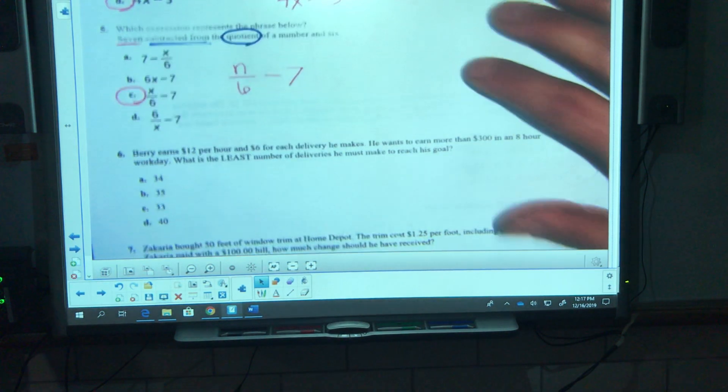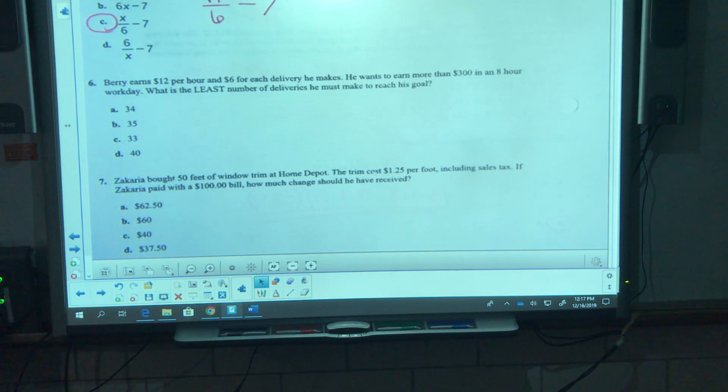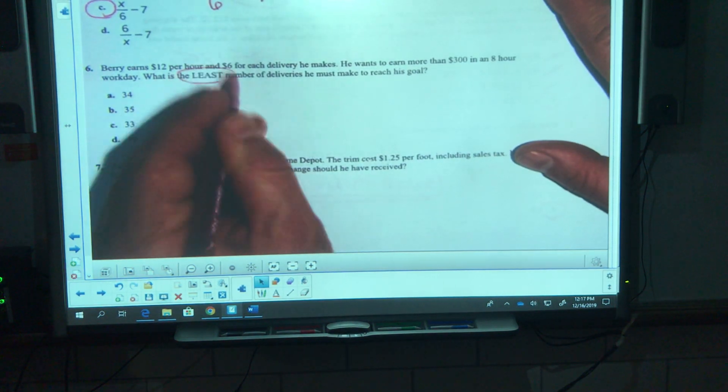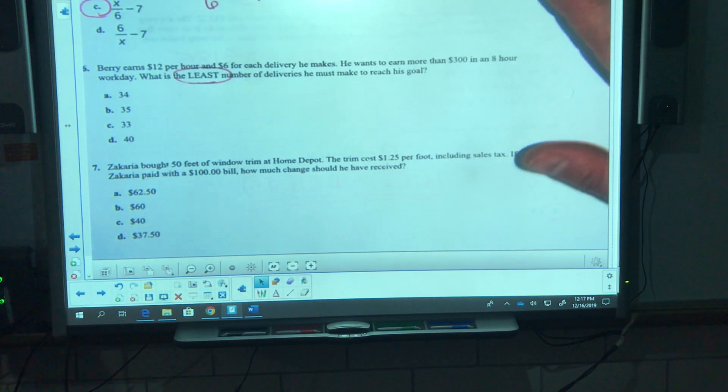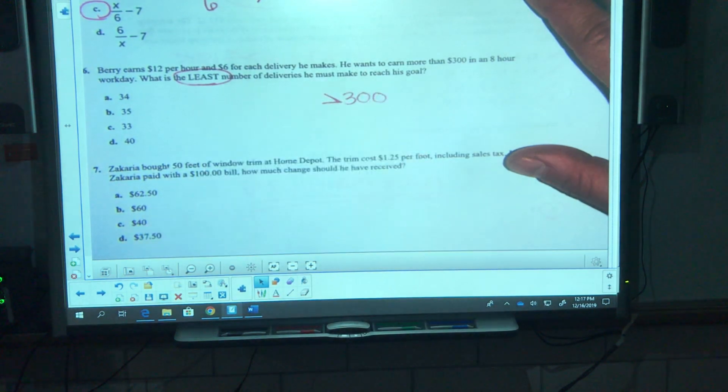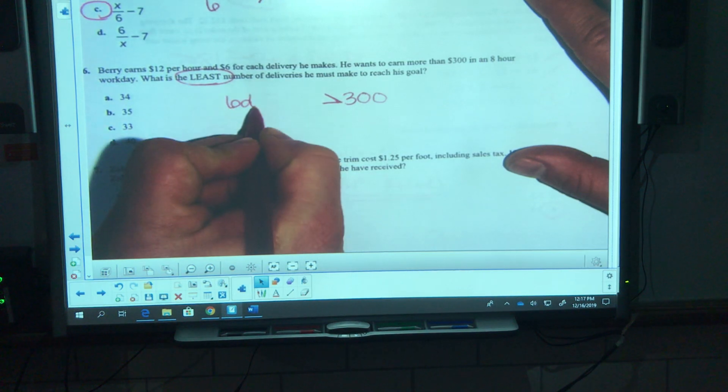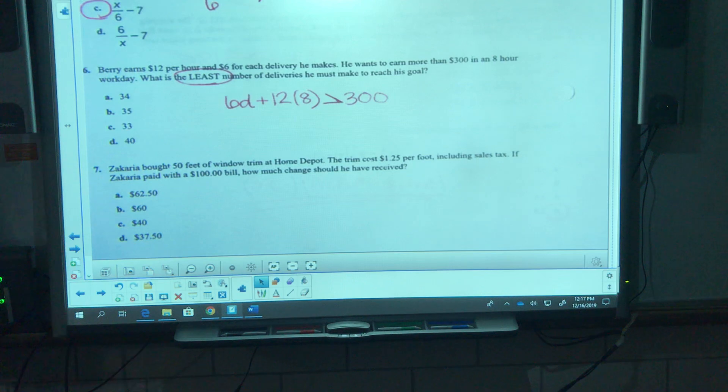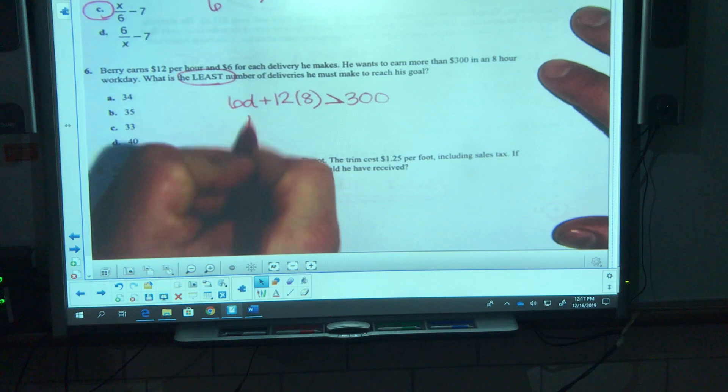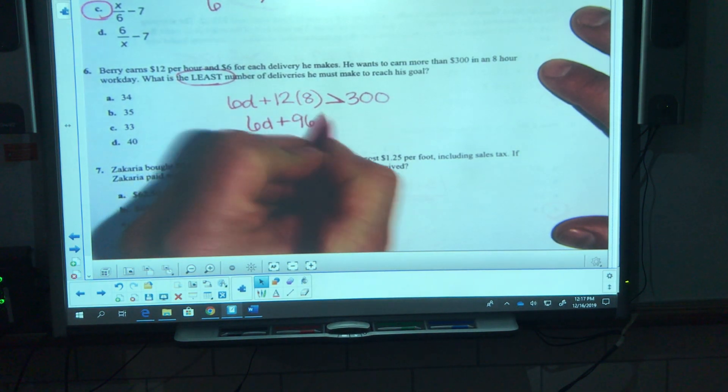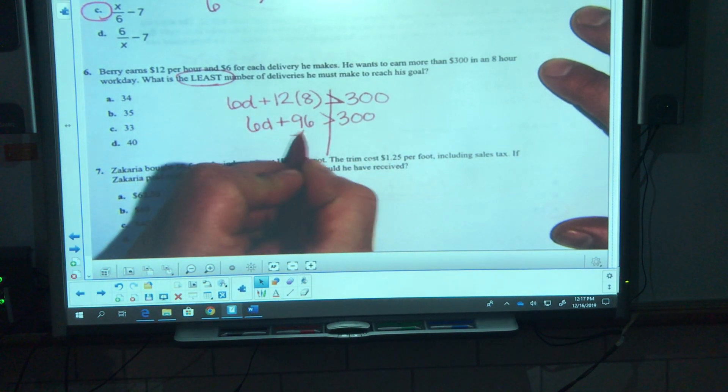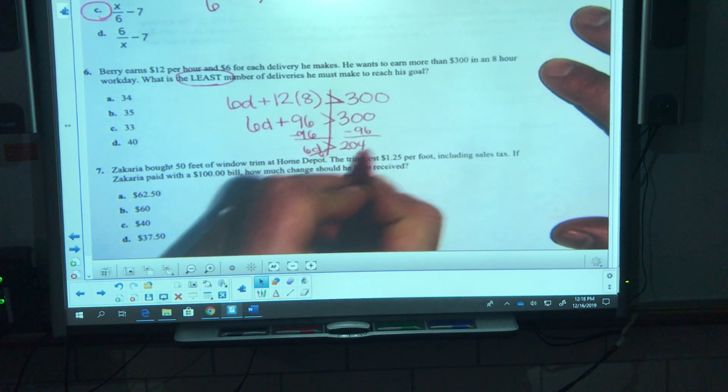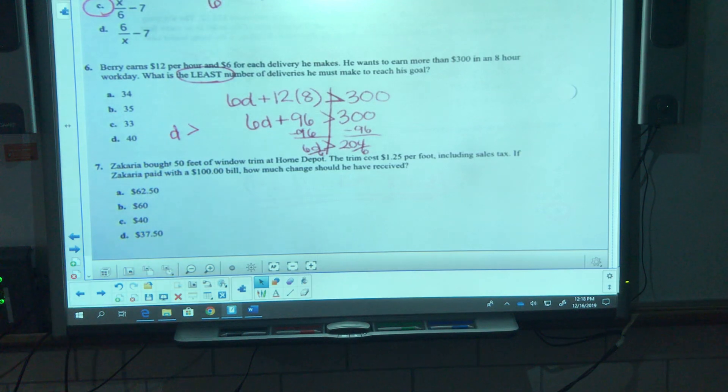Number 6, Barry earns 12 dollars per hour and 6 dollars for each delivery that he makes. He wants to earn more than 300 in an eight hour work day. What is the least number of deliveries he must make to reach his goal? Well, he wants to make greater than $300. He's gonna make $6 per delivery and $12 per hour. We know that he works an eight hour day, so I can automatically put in a number for my hours. 6d plus 96 is greater than 300.